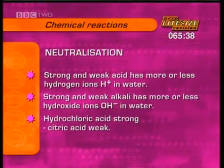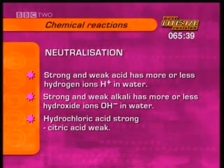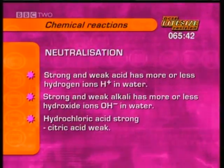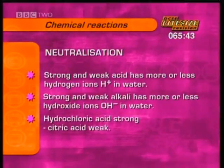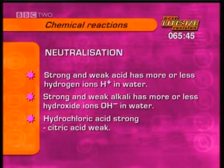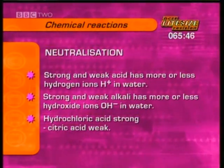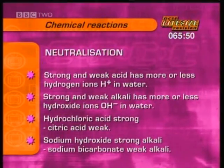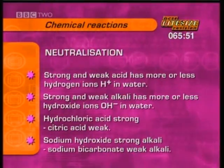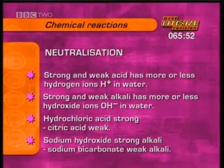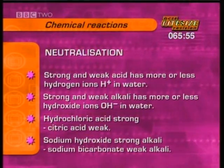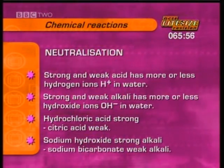A strong acid like hydrochloric acid produces many hydrogen ions, and a weak acid like citric acid produces few hydrogen ions. A strong alkali like sodium hydroxide produces many hydroxide ions, while a weak alkali like sodium bicarbonate produces a few.